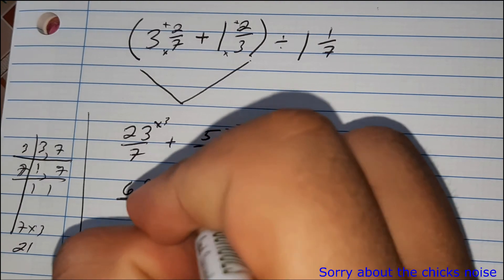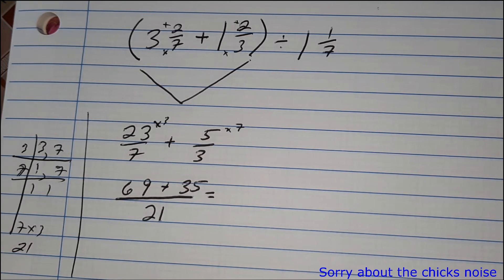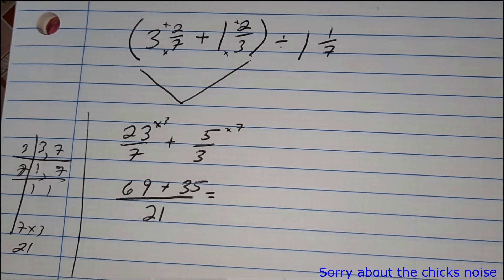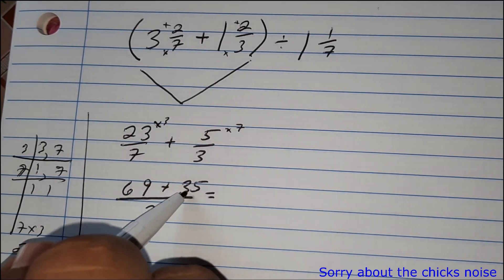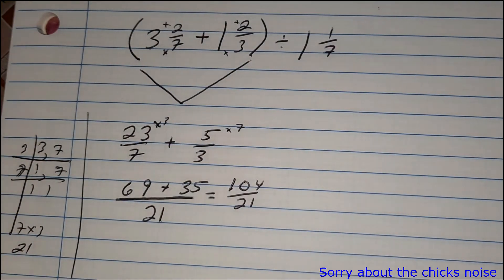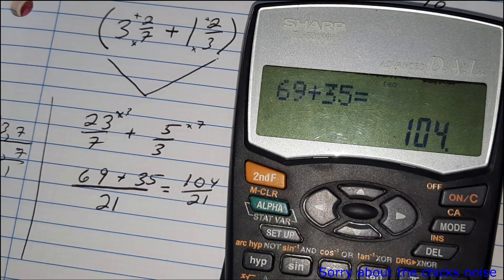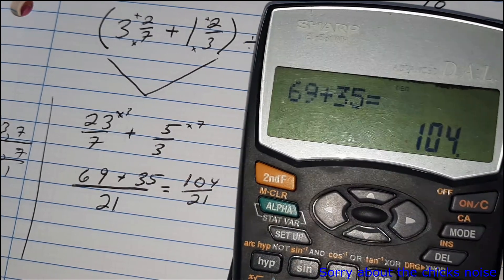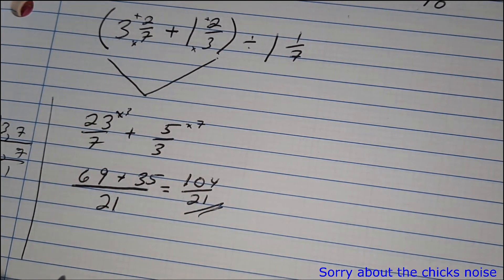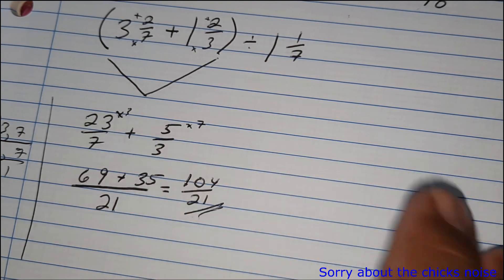We add: sixty-nine plus thirty-five. Let me check that — sixty-nine plus thirty-five gives one hundred and four over twenty-one. So the bracket equals one hundred and four over twenty-one. But we are not finished — this result still needs to be divided by the remaining term.